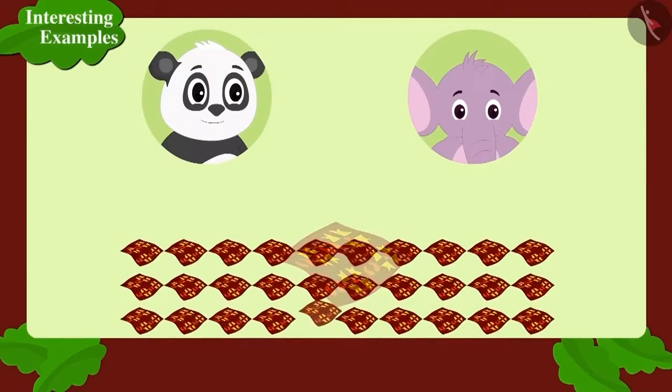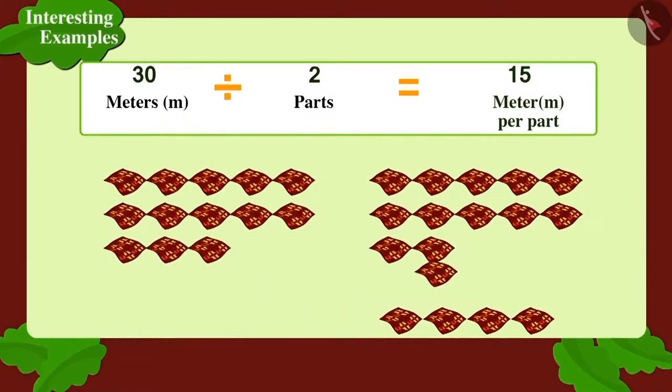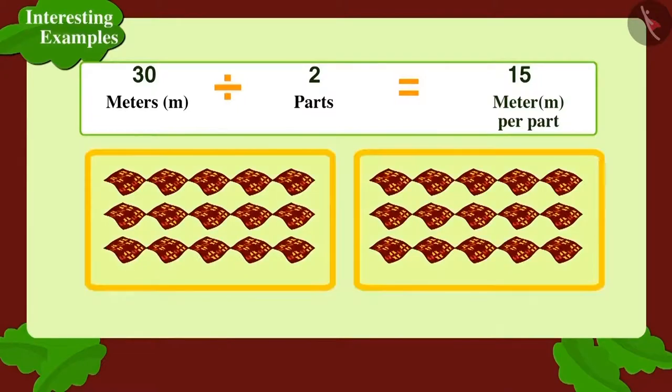Appu will have to divide that 30 meters fabric into 2 equal parts. Suppose there are 30 meters of fabric of 1 meter each. If we divide 30 into 2 equal parts, how many meters will be there in each part?